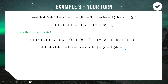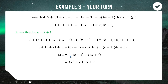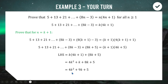Substituting our assumption, everything up to the 8k−3 term equals k(4k+1), then we add 8k+5 on the end. Expanding and collecting: 4k² + k + 8k + 5 = 4k² + 9k + 5. We now need to factorize this non-monic trinomial. Factorizing non-monic trinomials is an important skill for mathematical induction — make sure you're comfortable with it, and I have a video on the channel if you need help.